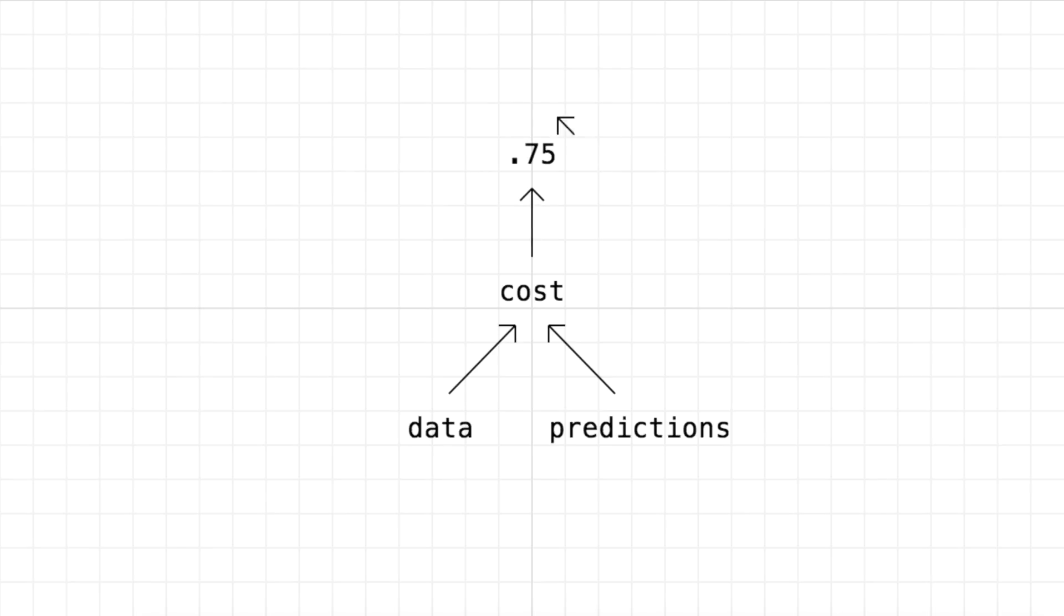Now we interpret this number as how bad our computer is doing. It's how far our predictions are from what they should be from the data. So what we want to do is minimize this number, and when we minimize this number that's telling us we're getting our predictions closer to what they should be from the data.